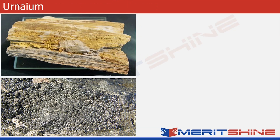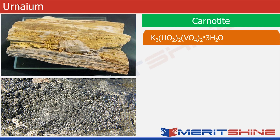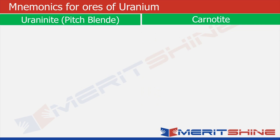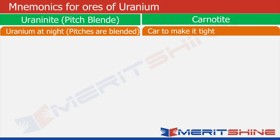With this we can move to the ores of uranium. Here we have carnotite which is an oxide of uranium along with some oxides of vanadium and some potassium. Then we have uraninite, formerly known as pitch blende, which is again an oxide of uranium. For uraninite I can think of uranium at night, and pitch blende — pitches are blended. For carnotite I imagine someone is using a car to make it tight.